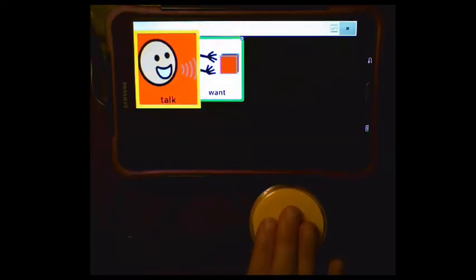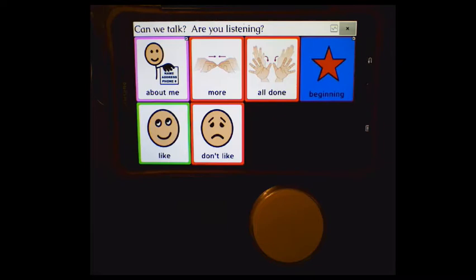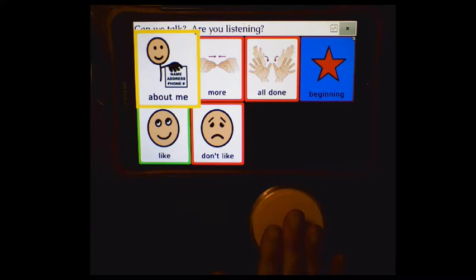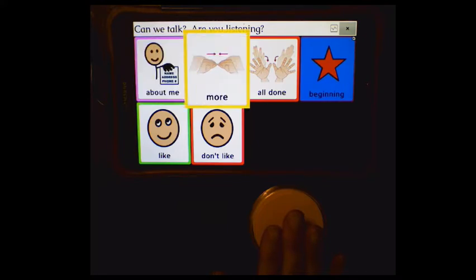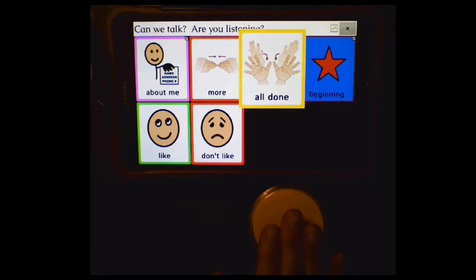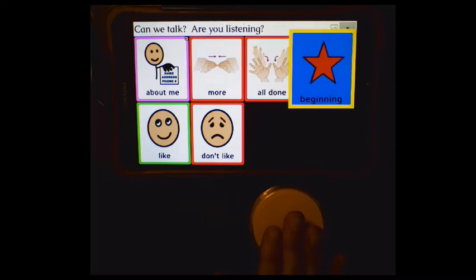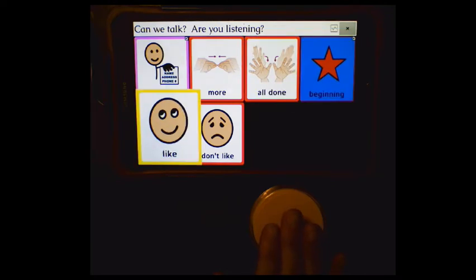In the Talk category, we see options like 'Can we talk? Are you listening?' with choices for About me, More, All done. There are also Like and Don't like buttons. Selecting Like says 'Yay, I like that.'